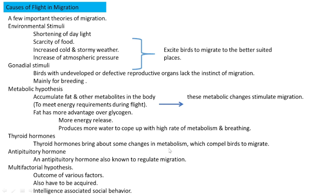Thyroid hormones bring metabolic changes in birds that compel them to migrate. Anti-pituitary hormone theory suggests a hormone working against pituitary function helps regulate migration. The multifactorial hypothesis states that many external factors together stimulate birds to initiate migration. Migration is thus the outcome of various factors, and it is considered both an innate behavior and an intelligence-associated social behavior.